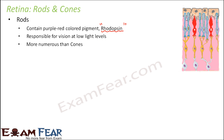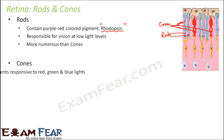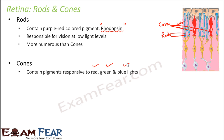Looking at the internal structure of the retina, the blue-colored cells are the rods and the red-colored cells are the cones, and you can see that the blue ones are more numerous than the red ones. Cones contain pigments which are responsive to red, green, and blue lights, and are basically responsive to bright lights. Color distinction is done by cones.